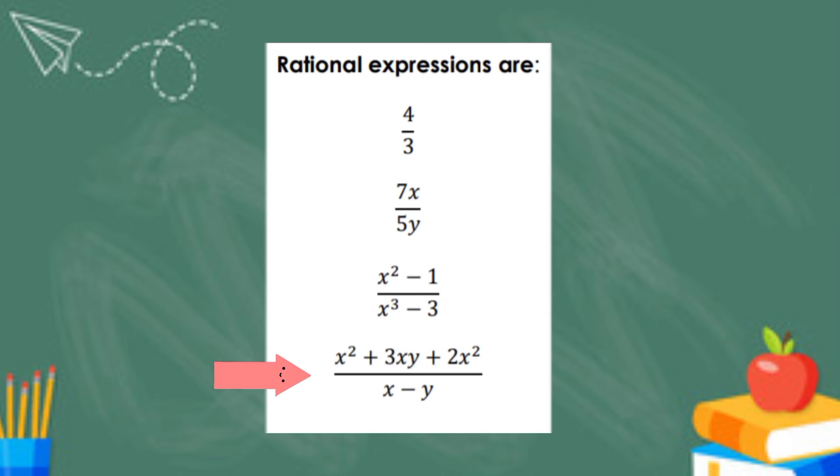You're right! The P is the whole x squared plus 3xy plus 2x squared. And the Q is x minus y. Did you get them correctly? Good job!